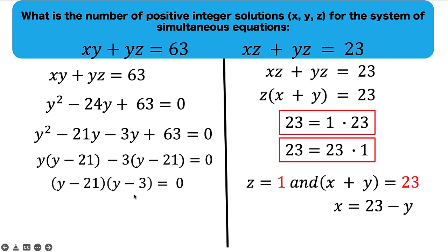And since the product of these two factors is 0, each one of them is equated to 0. And finally we have y equals 21 and y equals 3.